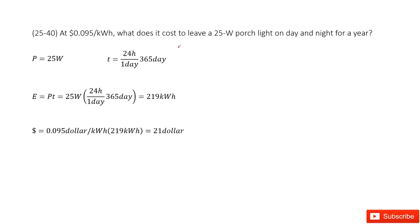So what does that mean? That means we have a light bulb. The power given is 25 watts, and the time for which the electric current goes through it is day and night for a year. So there are 24 hours per day and one year is 365 days.